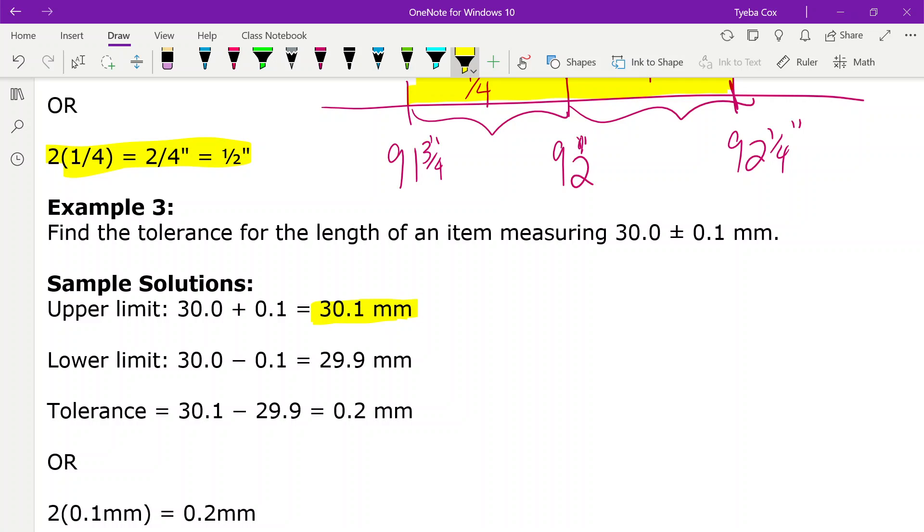Our lower limit, we're going to subtract the 0.1 from the 30 and we get 29.9 millimeters. Now our tolerance is our max minus our min and we end up getting 0.2 millimeters as our tolerance.